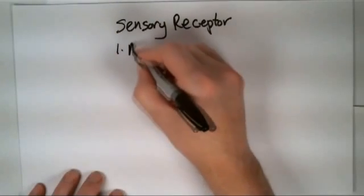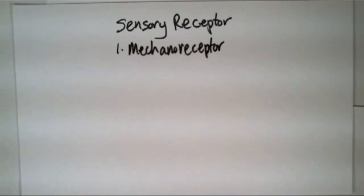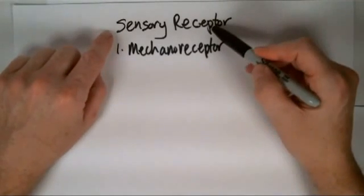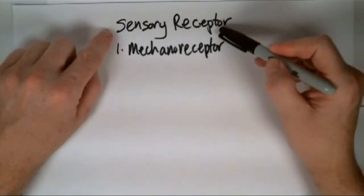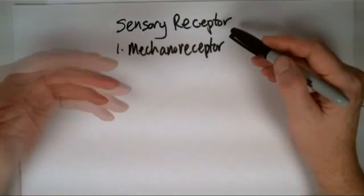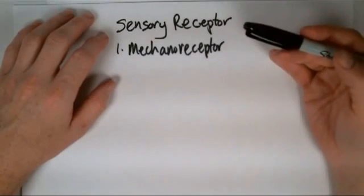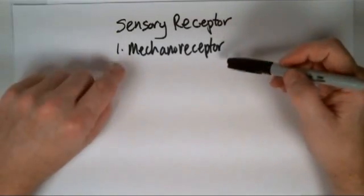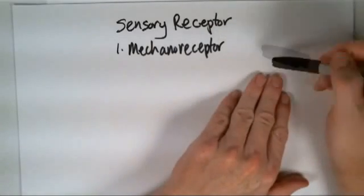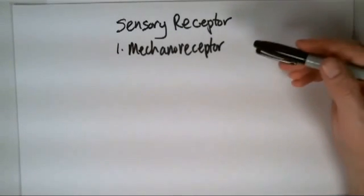The first one is a mechanoreceptor. Now a mechanoreceptor generates a nerve impulse. Let's talk about what's going on here. This receptor, the sensory side of the nervous system, so we're in the peripheral nervous system. You're going to pick up some stimulus from the environment and that stimulus then gets transmitted via an impulse through an afferent neuron or a sensory neuron to the central nervous system.